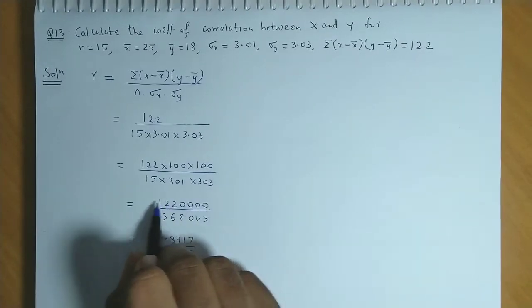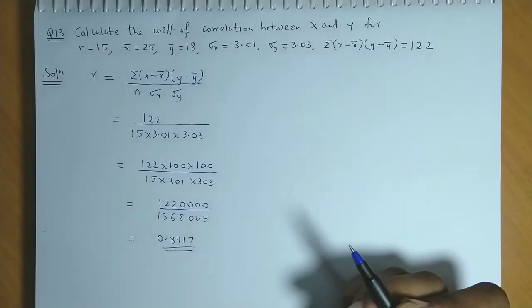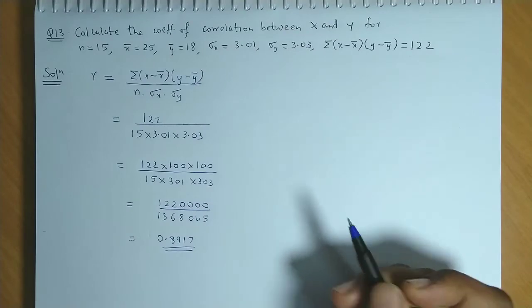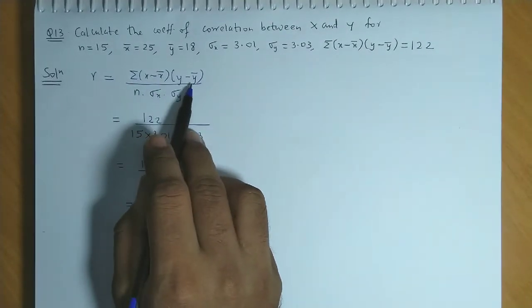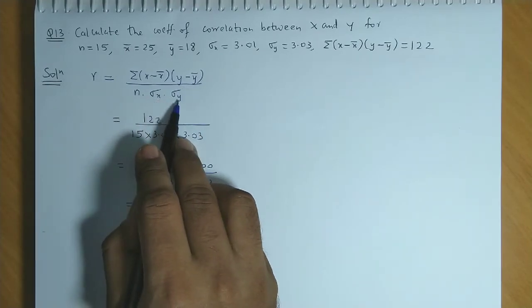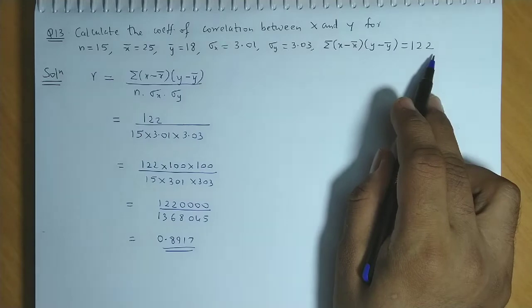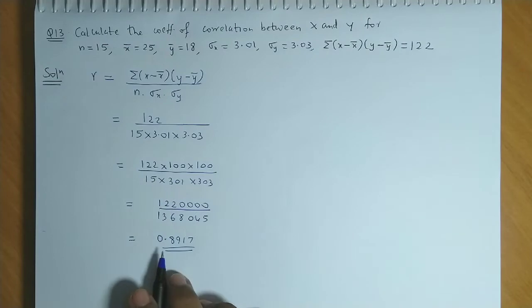You have to do this calculation carefully. Either you divide, or you can easily obtain this answer through calculation. We use the formula r is summation x minus x bar times y minus y bar upon n into sigma x into sigma y. All the values have been provided, so we substitute in the formula and get the value of r as 0.8917.